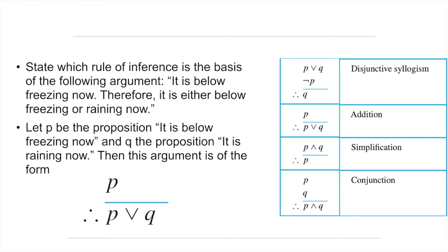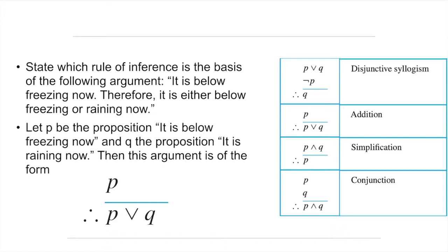In this case the argument is: it is below freezing now, therefore it is either below freezing or raining now. To solve this exercise more easily we need to learn all the rules of inference so we don't have to prove them. If we apply one of the rules we just mention the name. If we don't remember the names, then we will have to create the proof of the specific rule we want to use.